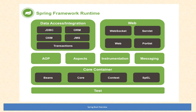For Spring AOP — aspect-oriented programming — we have AOP, aspects, instrumentation, and messaging. As part of this course, we are not much focused on AOP. For the web layer, we are going to write web applications using Spring Web. Here we have web sockets, servlets, and web portlet. Portlet is any plugin service. Servlets run in the background for Spring — even though we won't be directly writing servlets, the Spring framework provides them for us.